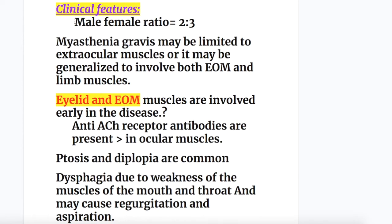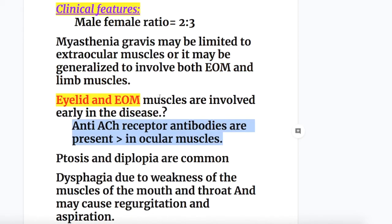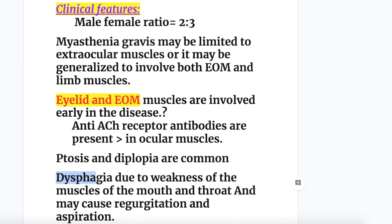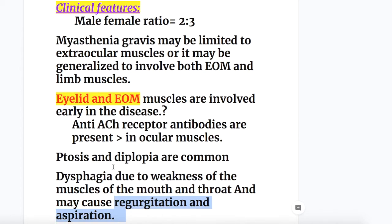Regarding clinical features, the male-to-female ratio is 2:3, so it is more common in females, especially younger females. Myasthenia Gravis may be limited to extraocular muscles or generalized to involve both extraocular and limb muscles. Eyelid and extraocular muscles are involved early in the disease because anti-acetylcholine receptor antibodies are more concentrated there. Ptosis is the most common feature and diplopia also occurs. Dysphagia occurs due to weakness of the muscles of the mouth and throat, and may cause regurgitation and aspiration.